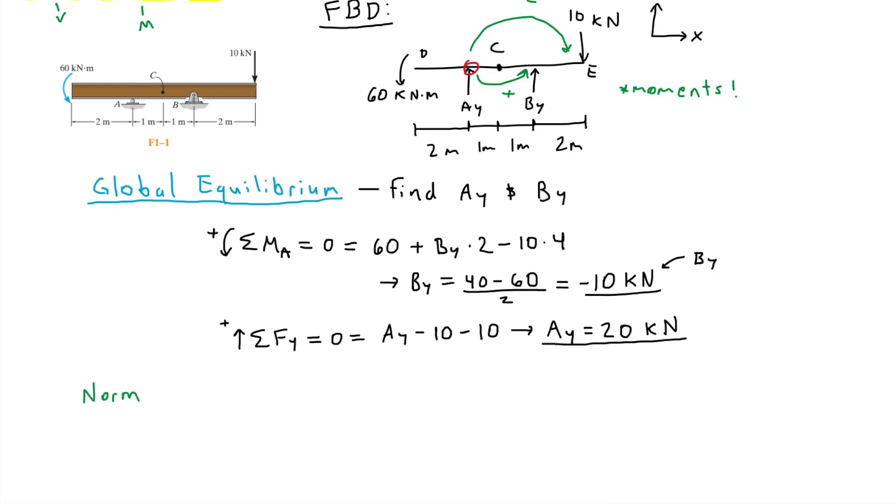First, we have normal force. For this problem, we are interested in point C. The first step when solving for internal forces is to make the appropriate cuts along the beam, typically between any changes in forces, in order to analyze the internal effects on the beam. For example, here, I can make a cut between points A and B at point C.